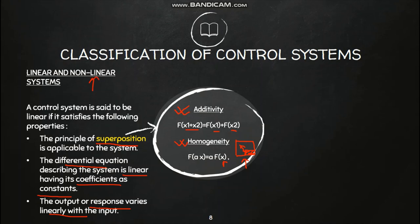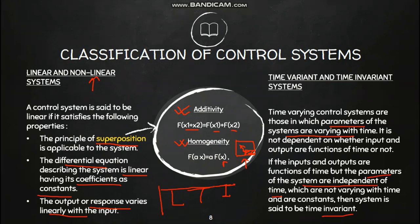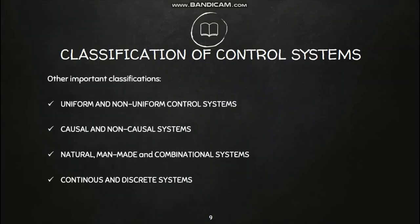Similarly, a nonlinear system is the reverse of these three points. We can also classify systems as time variant and time invariant. Time varying control systems are those in which the parameters of the system vary with time. When the parameters are independent of time, it is a time invariant system. These two classifications are important because all systems we will consider in this subject are LTI systems — Linear Time Invariant systems.